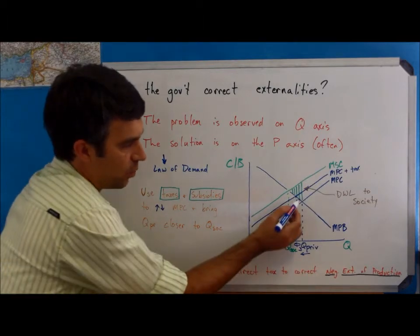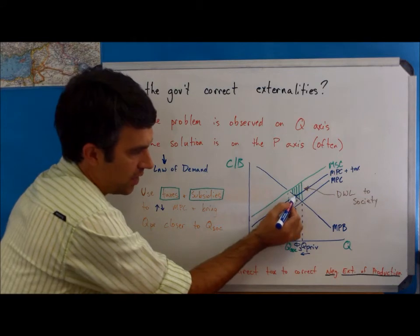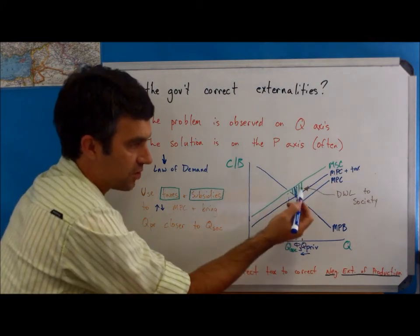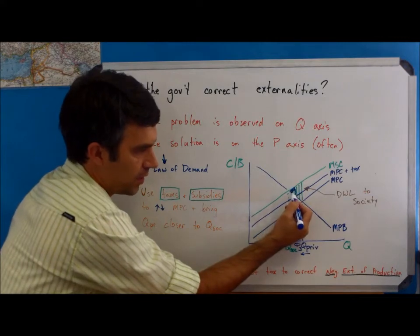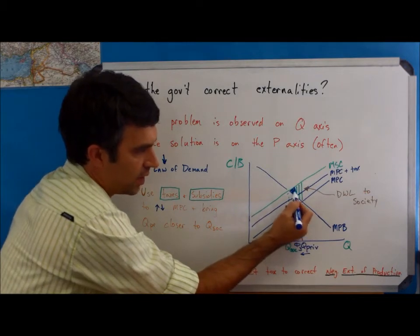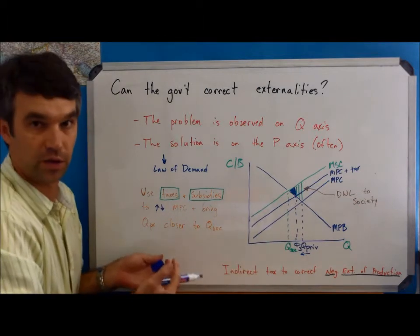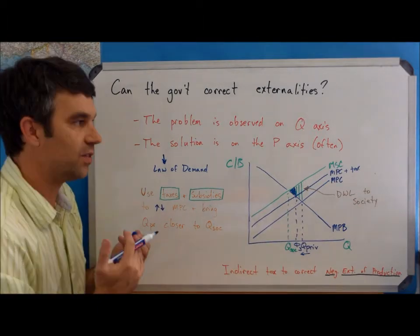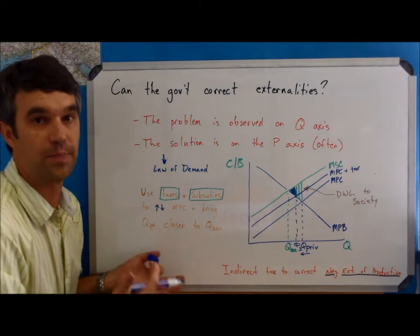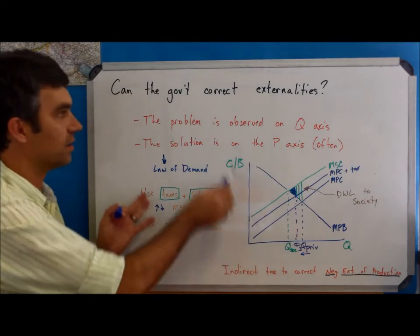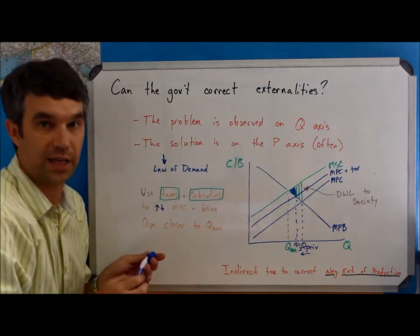We can show this on the diagram by pointing out that if we go up from this to the marginal social cost curve, that the new size of our deadweight loss to society, the blue triangle, is significantly smaller than the original triangle. The specific tax has reduced the amount of deadweight loss to society. So we can say that this tax has been effective in correcting the externality.